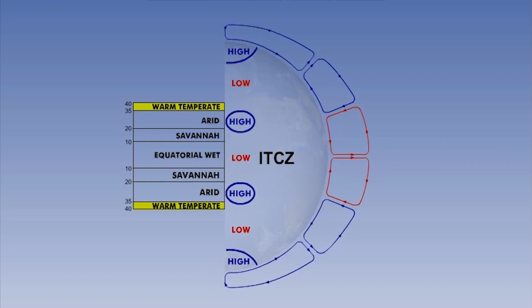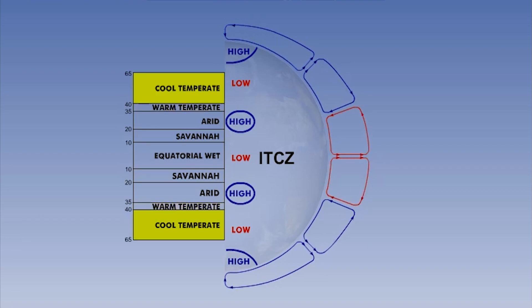The next zone forms part of the temperate latitudes and is called the cool-temperate zone. This typically extends from approximately 40 degrees to 65 degrees latitude. This zone is dominated by the traveling polar front depressions and their counterparts, the cold anticyclones or ridges. These move across the globe from west to east.